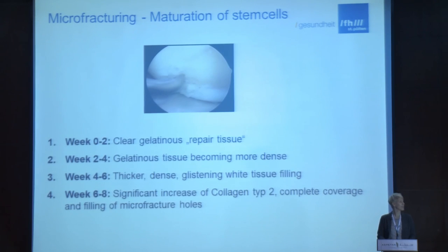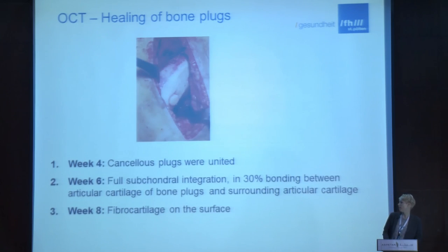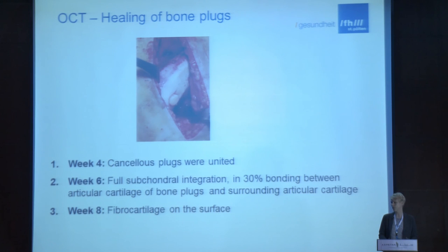The microfracture technique is not as sensitive. We have soft tissue in the first four weeks, but already after eight weeks we can find an increase of collagen type 2, which tells us the tissue is able to withstand compressive forces, and we also find complete coverage and filling of the defect. The fastest maturation process is observed in osteochondral transplantation, where the plugs unite within four weeks and after eight weeks we also see fibrocartilage tissue on the surface.